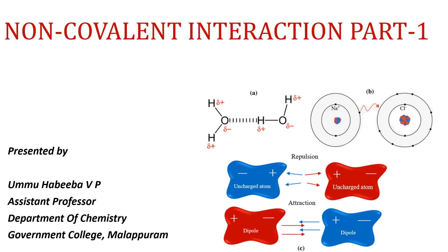We know interaction between atoms fall into two categories: covalent interaction and non-covalent interaction. Covalent interaction and non-covalent bonds differ in their strength. Covalent bonds, resulting from the sharing of an electron pair between two atoms, are the strongest. Non-covalent interactions are somewhat weaker.